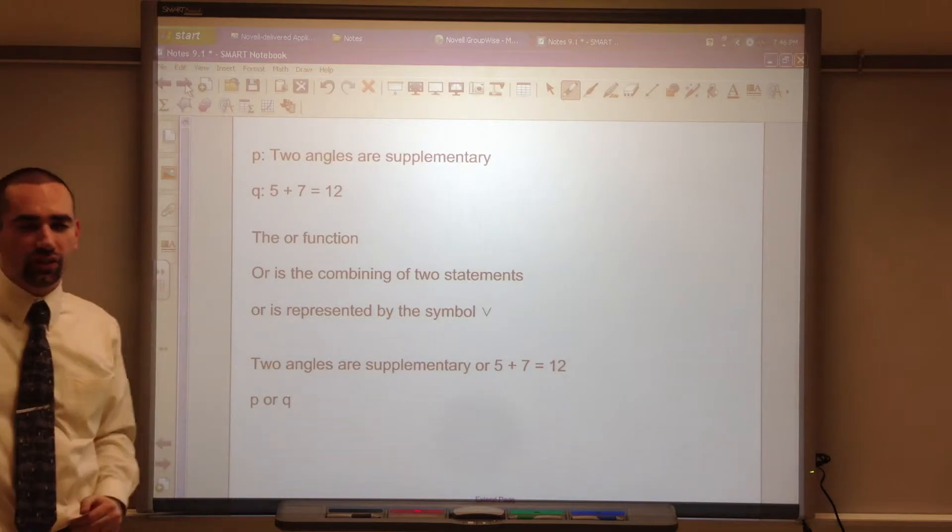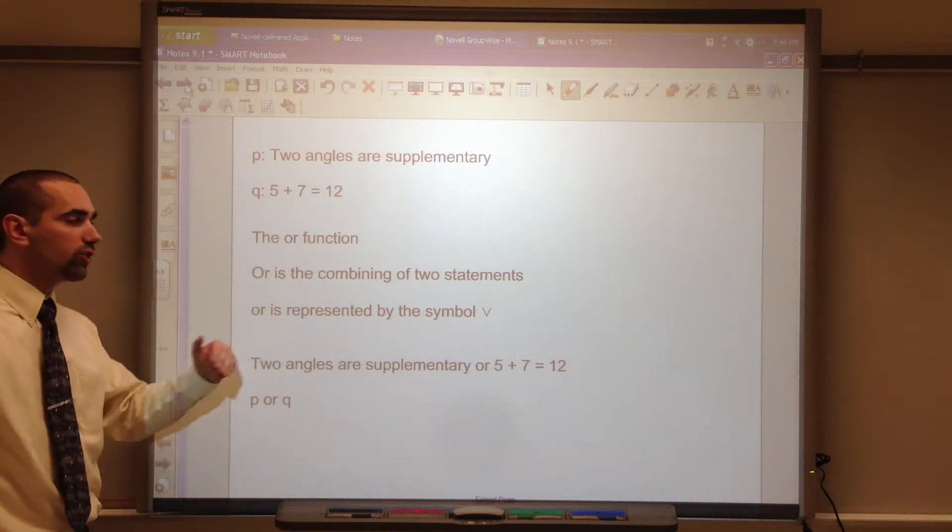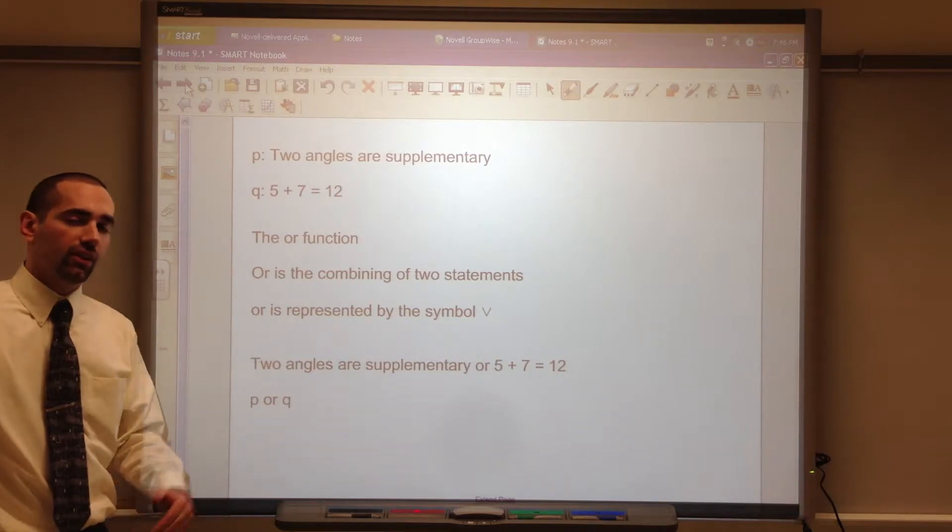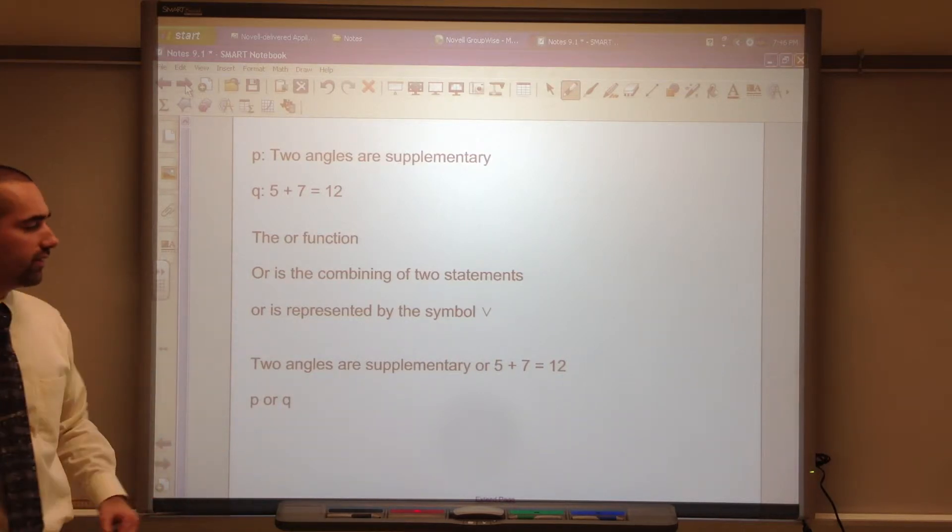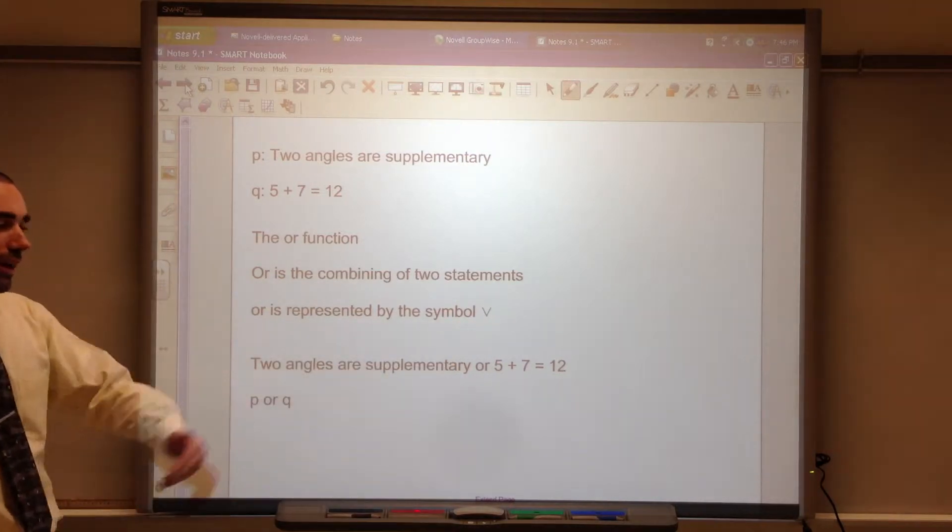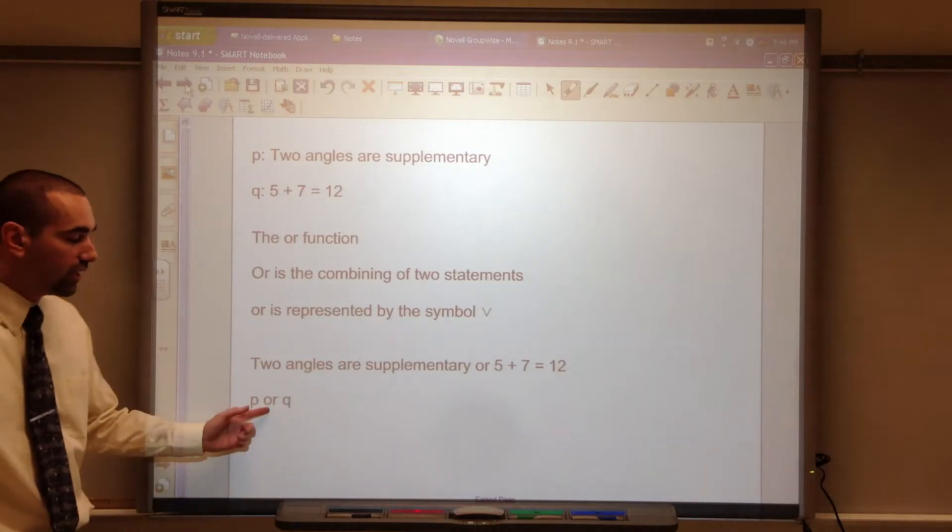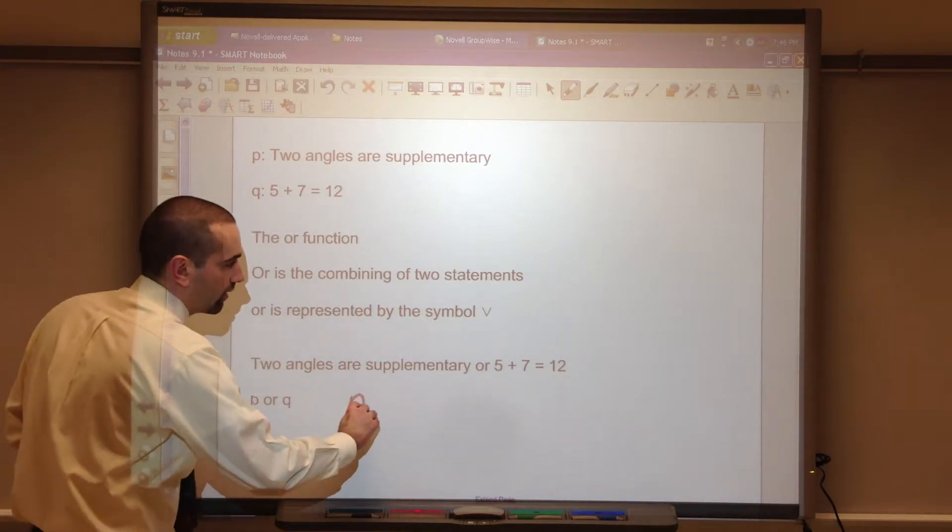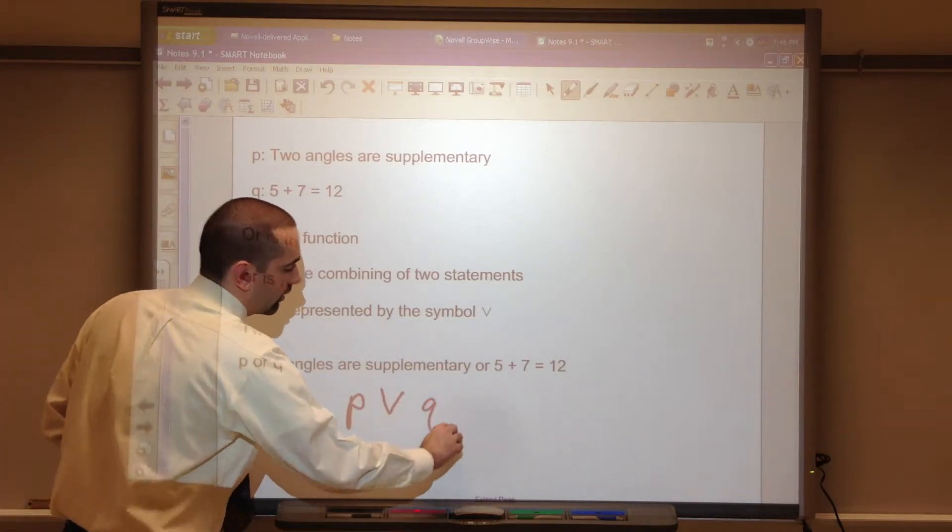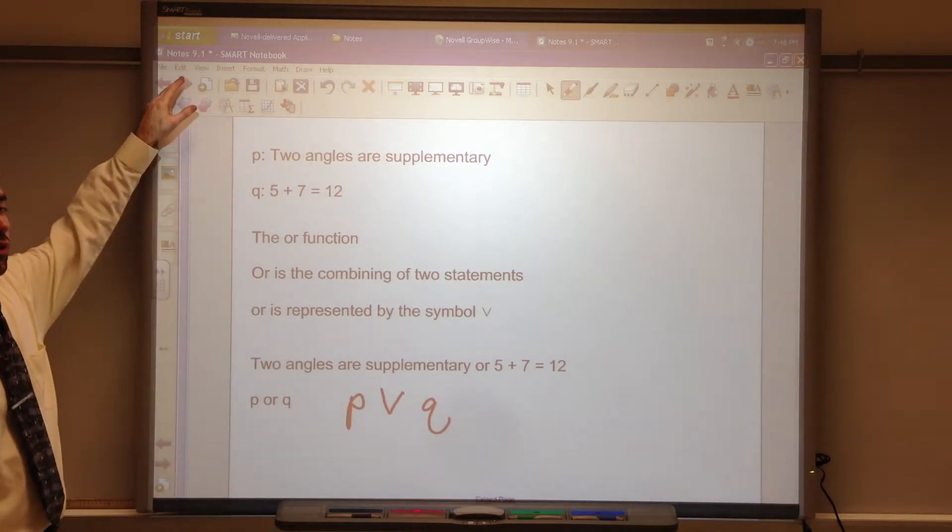P and Q are the same. The OR function. OR is also combining two statements together. This OR that. OR is represented by the symbol V. Two angles are supplementary OR five plus seven is equal to twelve. P OR Q. That's the OR function.